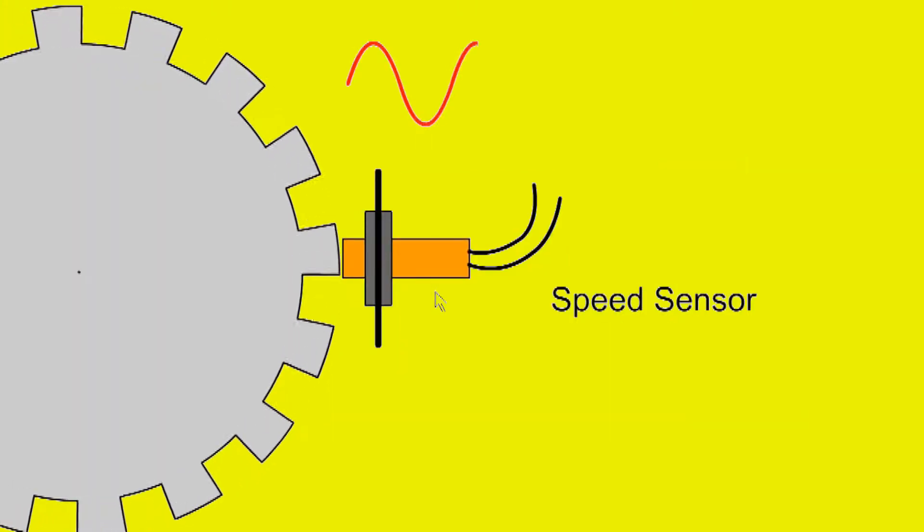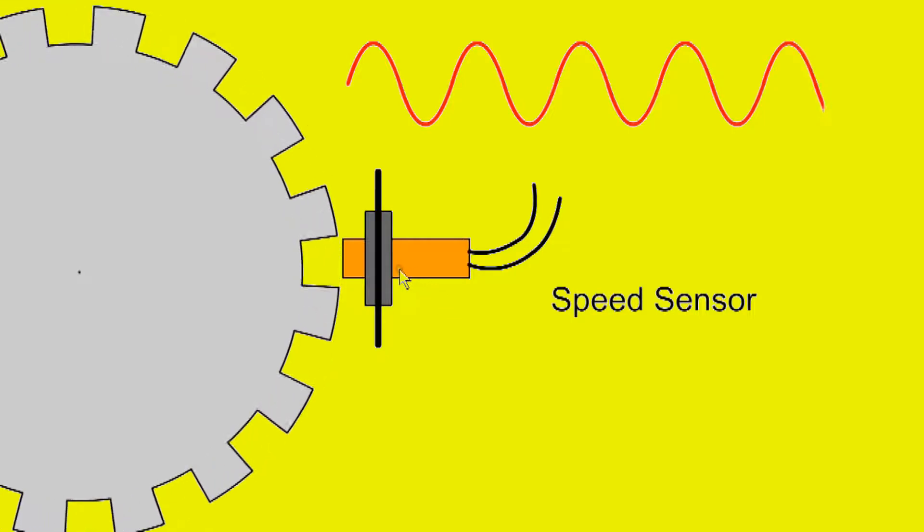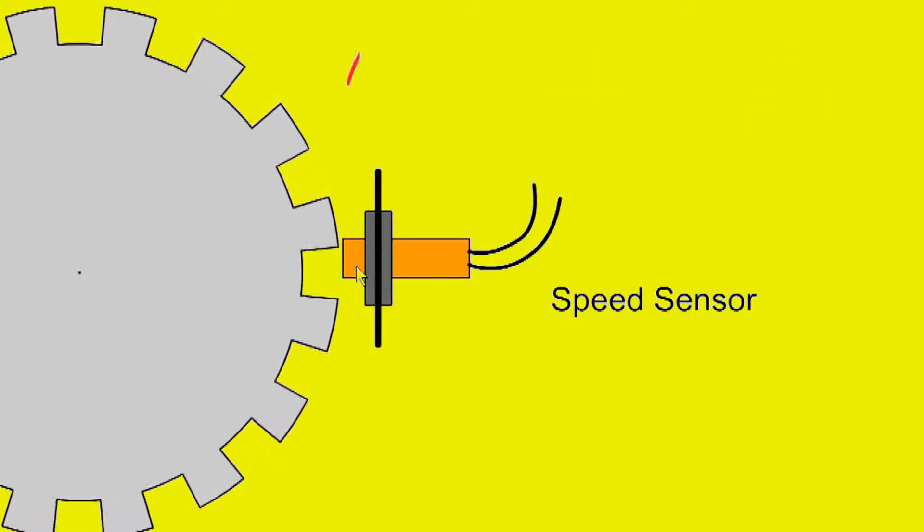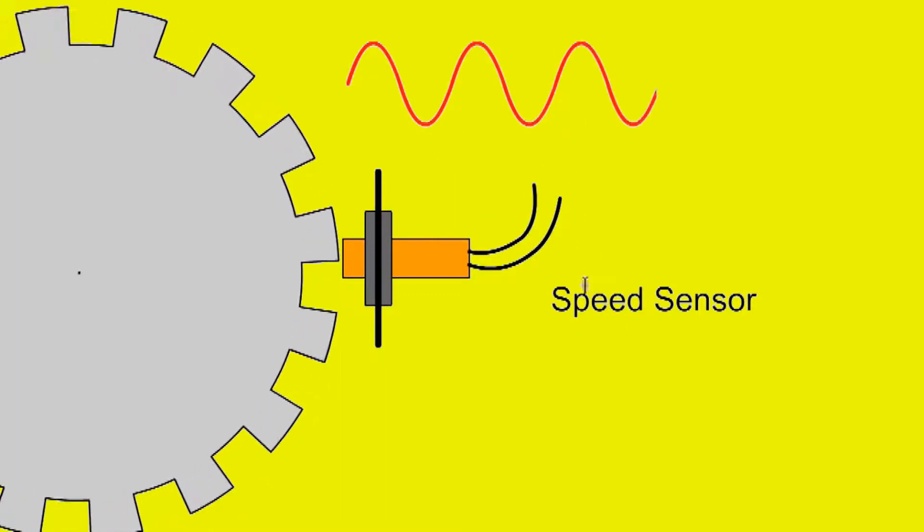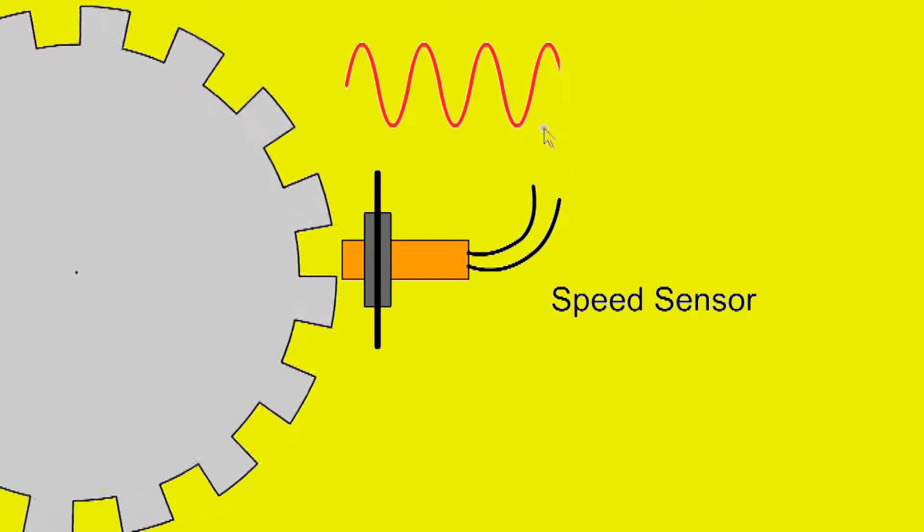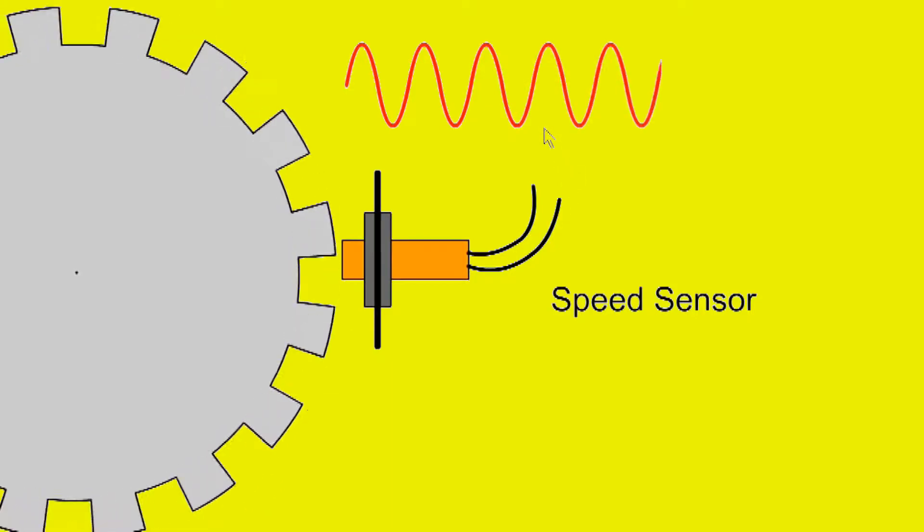First we look at the sensors which input information to the ECU. Speed pickups are based on inductive or magnetic speed sensors. When a toothed ferrous wheel moves past the magnetic sensor, it excites a voltage in the pickup coil, producing an electrical analog waveform. The frequency of this waveform is proportional to the speed of rotation. They are used for crankshaft, camshaft, and wheel speed sensors.